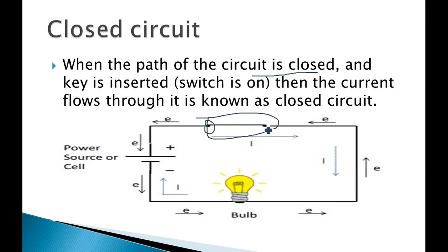When the key is switched on, current flows through it — that is a closed circuit. A closed circuit means when the path of the circuit is closed and the key is inserted, meaning switch is on, then current flows. Your whole path is complete: all connections are proper, wires are connected, key is on, battery and cell are connected — so current flows in a closed path. That is a closed circuit.